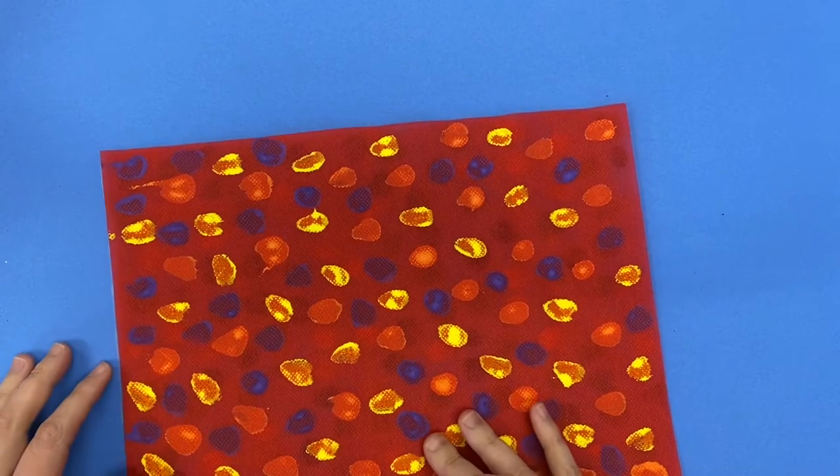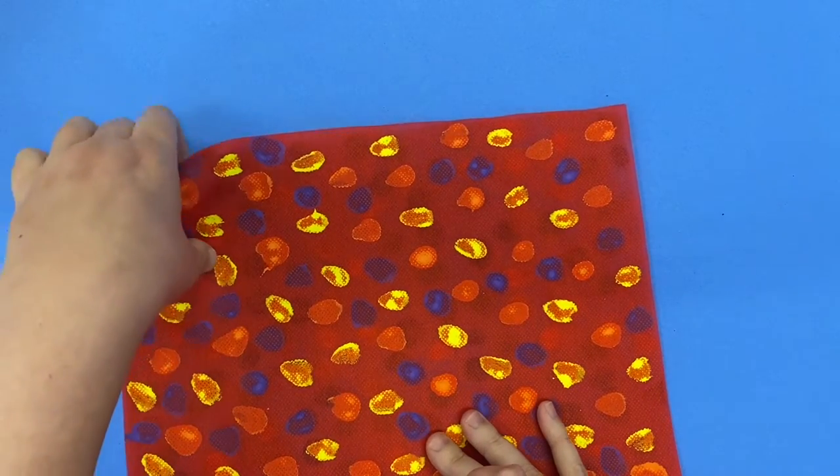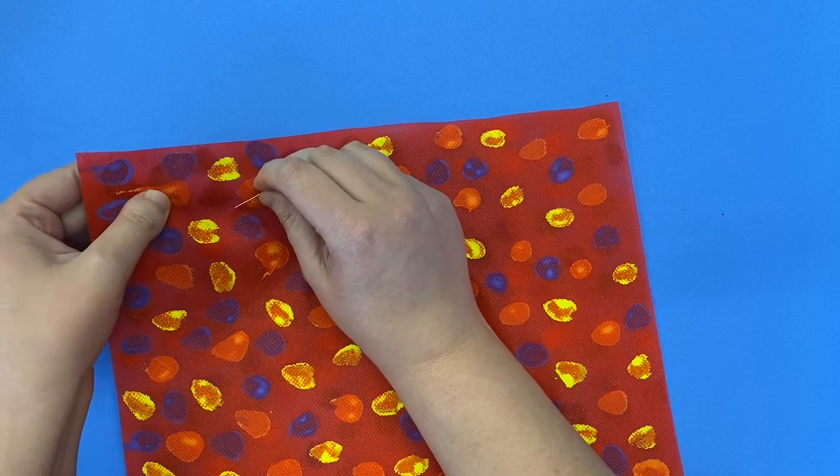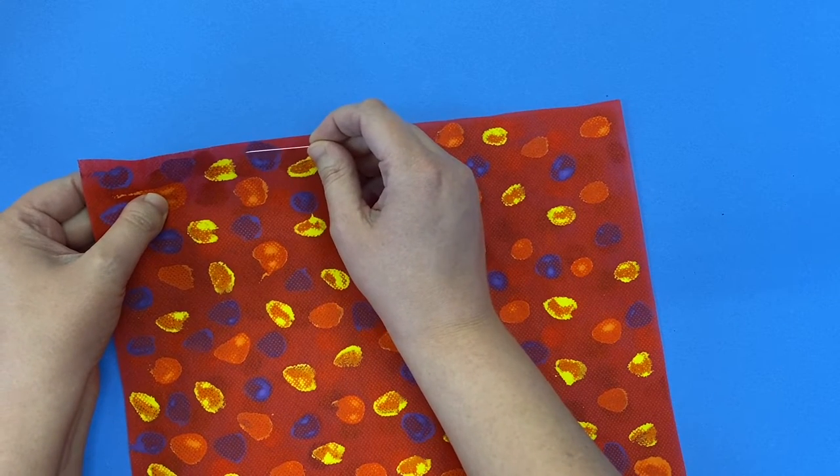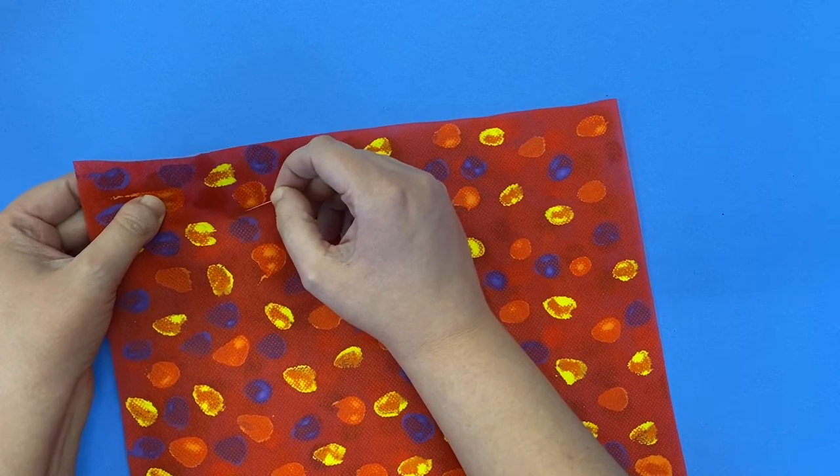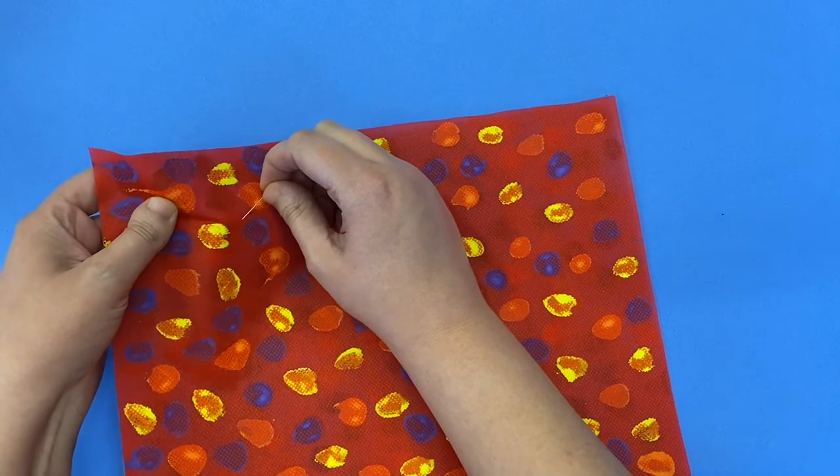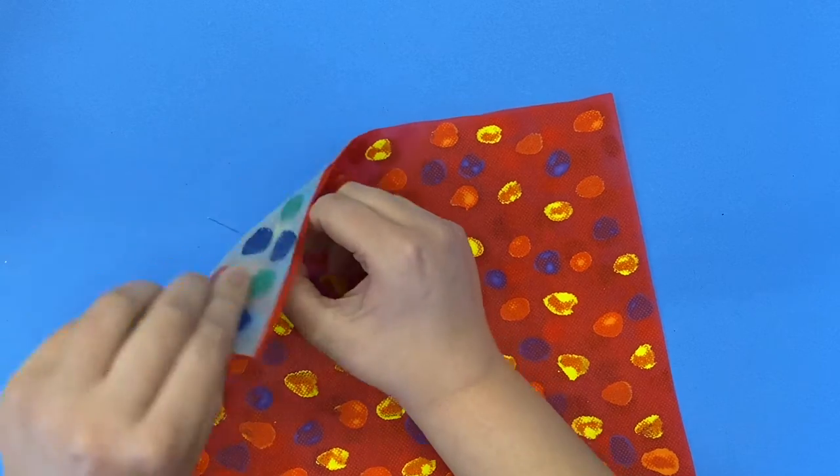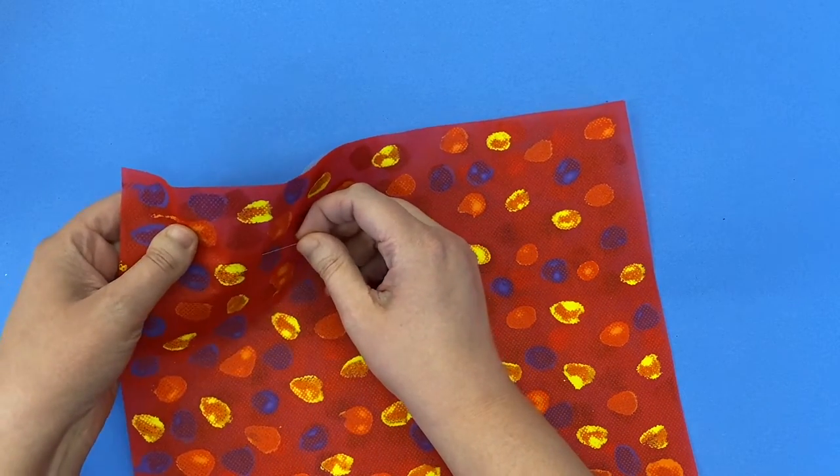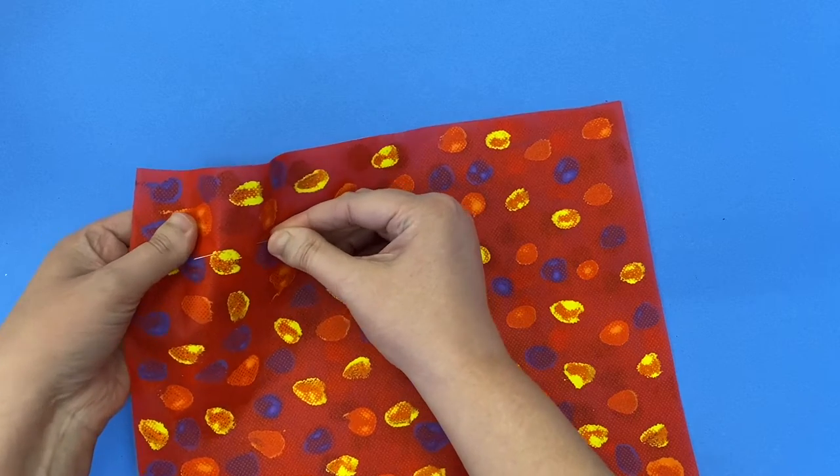So what we want to do is we want to line up the edges of our fabric, and you're going to stick a pin in. Don't put it right next to the edge because that's where we're sewing. Stick it in a little bit further in. You're going to push it in through that side on the back, and then turn it and push it back out through the front.